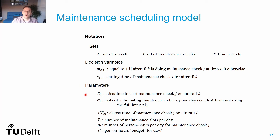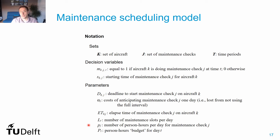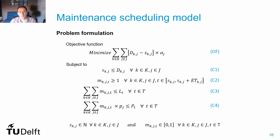For parameters, we need to know the due dates associated with each maintenance check j for all aircraft k, the costs of anticipating a maintenance check j by one day, and the elapsed times associated with each scheduled maintenance check. To control resources, we also need to know the number of maintenance slots available per day, and the person-hours required to perform each maintenance check. With this nomenclature, we can define the following mixed integer linear model.